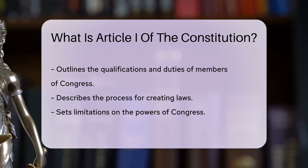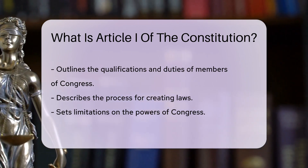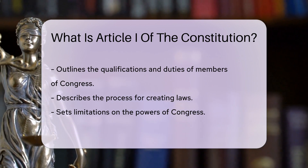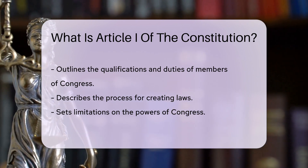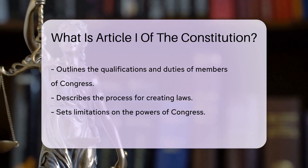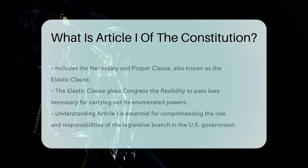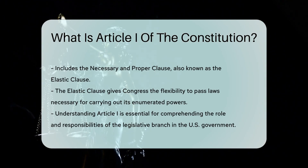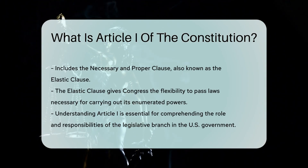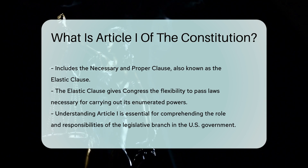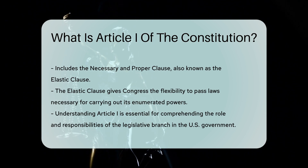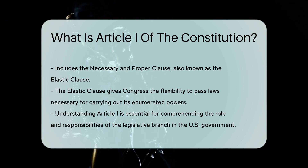Additionally, Article 1 includes the Necessary and Proper Clause, also known as the Elastic Clause, which gives Congress the flexibility to pass laws necessary to carry out its enumerated powers. Understanding Article 1 is crucial for comprehending the role and responsibilities of the legislative branch in the U.S. government.